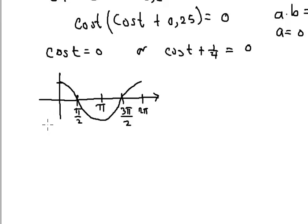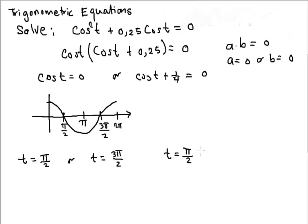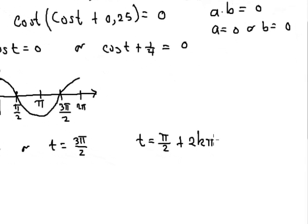I hope everybody understands that. Then I can say in the first, from zero to two pi, the solutions are t equals half pi, or t equals three pi over two. That's the solution. If I want to give the general solution now, I can say t equals half pi plus 2k pi with k an integer. Then I can do the same for that one.